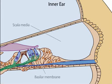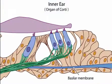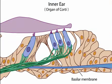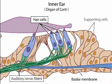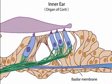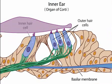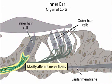Within the scala media and atop the basilar membrane is the organ of Corti, the collective term for all the elements involved in the transduction of sounds. The organ of Corti includes three main structures: the sensory cells called hair cells, an elaborate framework of supporting cells, and the terminations of the auditory nerve fibers. Each human ear contains one row of about 3,500 inner hair cells and three rows of outer hair cells, totaling about 12,000 cells. Afferent nerve fibers running from the inner hair cells account for 95% of the afferent nerve fibers in the auditory nerve and give rise to the perception of sound.